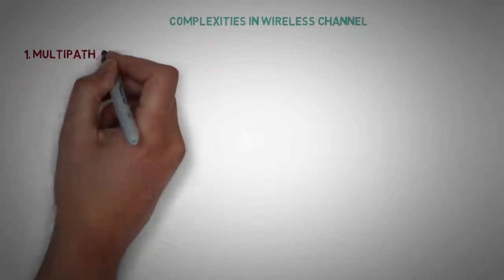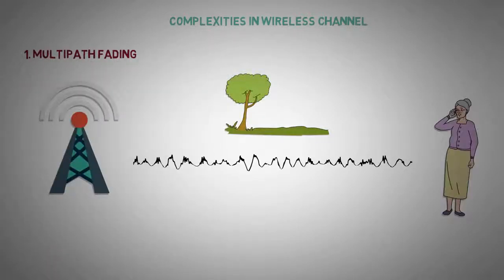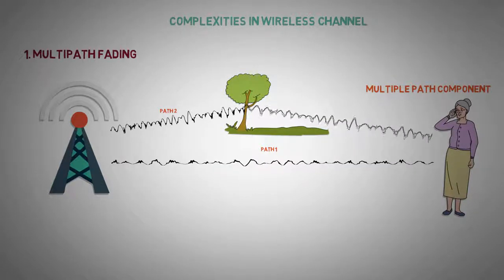Multipath fading. Unlike a wired channel which uses a fixed path, the signals in a wireless channel can reach a user using multiple paths. All these signals known as multipath components may have different channel gain and time delay.